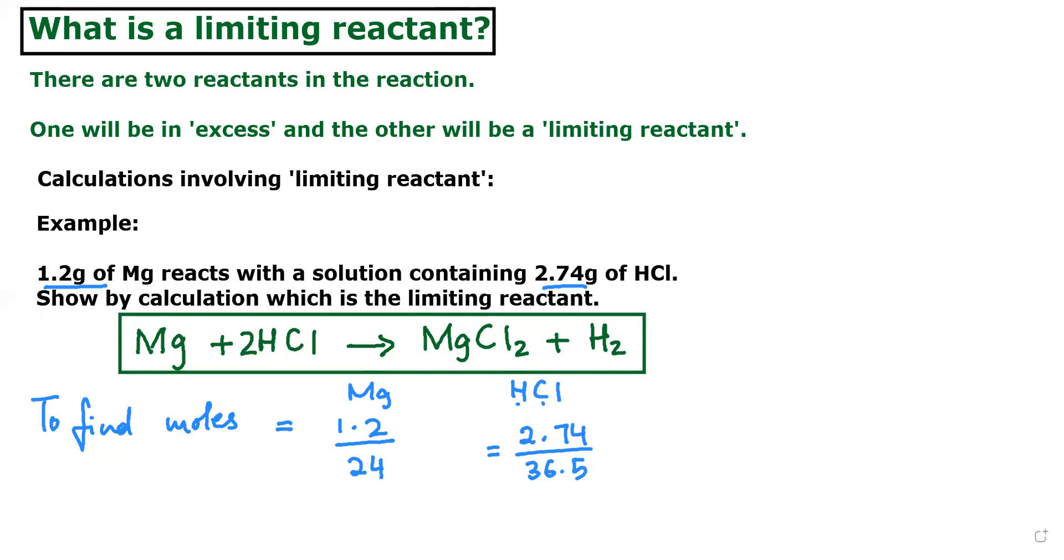So this is going to be 36.5. So once you do calculation, 1.2 divided by 24, what do you get? 0.05. 0.05, these are your number of moles for magnesium. And 2.74 divided by 36.5 means you get 0.075. 0.075 moles. So it means you have these two number of moles.